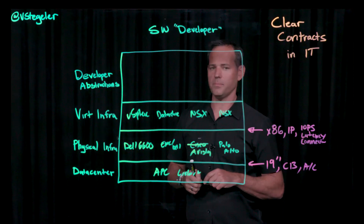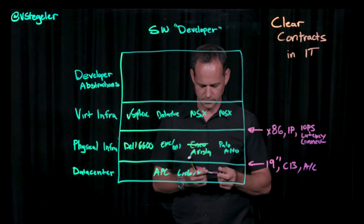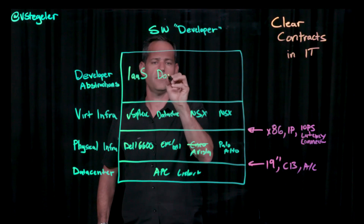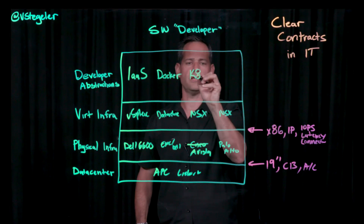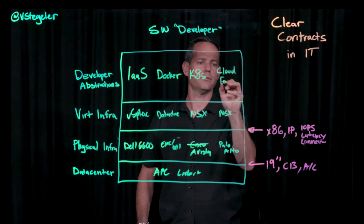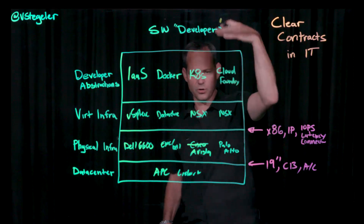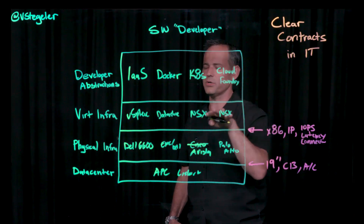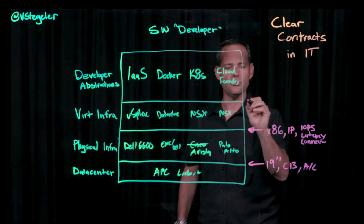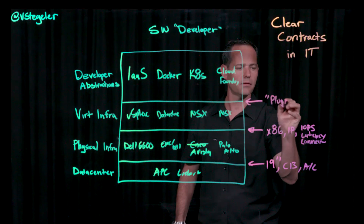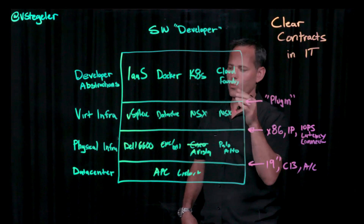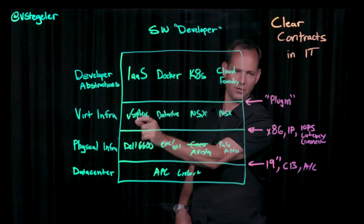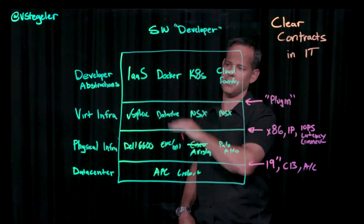The next piece is developer abstractions, and this is the important one, because now we're talking about what the end consumer wants. The developer abstractions might be infrastructure as a service, Docker, Kubernetes, or Cloud Foundry — some very common abstractions that a developer can work on top of. All of these technologies need to integrate with some sort of infrastructure, which typically means there's some sort of plug-in to work with the virtual infrastructure. The trick is, I can't swap out this technology unless an adequate plug-in exists in any given developer abstraction.